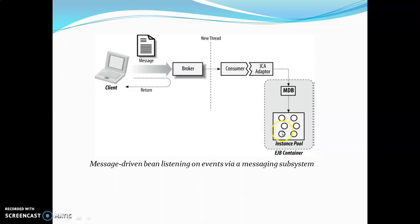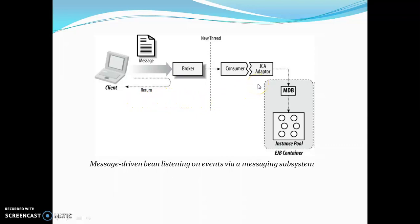The message driven bean sends messages to the consumer by listening on events via the messaging subsystem. The messaging subsystem in this case is our JCA adapter and the broker. The message driven bean works in this fashion: a client makes use of a request through the broker architecture via the JCA adapter, and the JCA adapter makes use of an MDB which creates instances inside the EJB container, and the EJB container gives the response back to the client in the form of an acknowledgement saying that the messages have been sent.